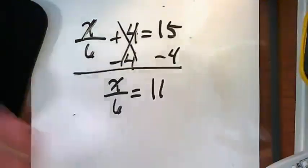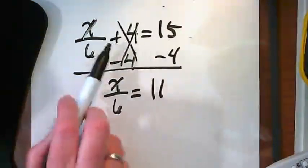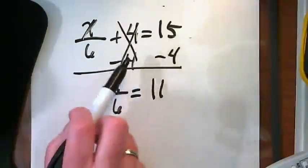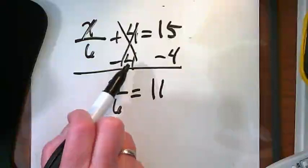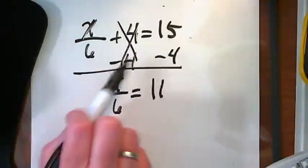So just to recap where we started, we're looking at x divided by 6 plus 4 equals 15. We're trying to make that plus 4 a 0, so we subtracted 4 from both sides.